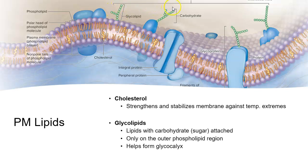All of these sugars extending from the proteins and the lipids form an outer coating called a glycocalyx. It doesn't really cover the entire cell membrane, but because these sugars stick up from the cell membrane, we call them the glycocalyx — sugar coat.